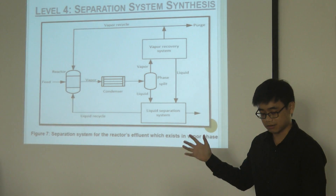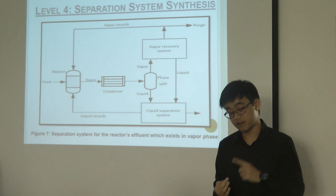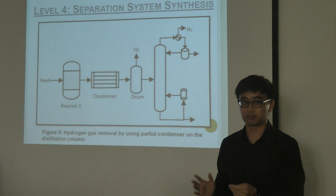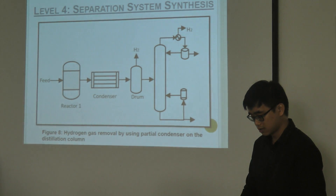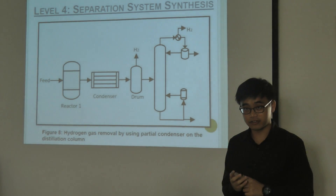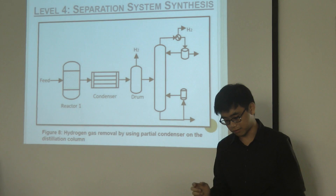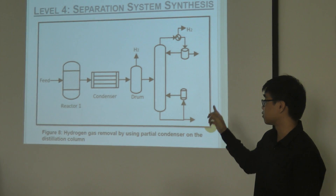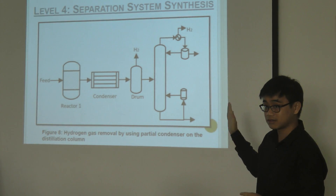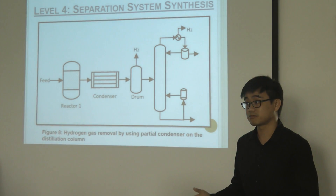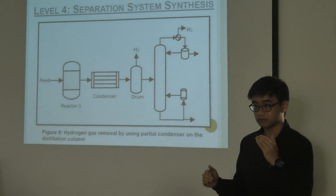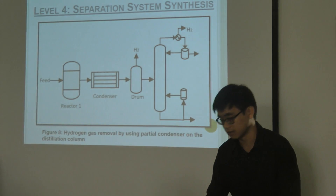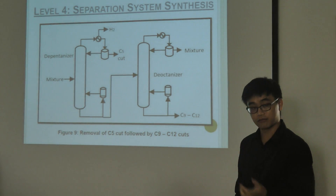Now, going into more detail on our process: hydrogen gas is removed using partial condensation. The boiling points of hydrogen and hydrogen sulfide are very low — negative 252°C and negative 59.7°C respectively. Hydrogen is removed first through the drum, and then further removed through the partial condenser. Because the temperature is so low, the other components become liquid while only hydrogen remains in vapor form, so it can be removed this way. Next is the removal of the C5 cut, followed by the C9 to C12 cut. There are two ways of arranging these two distillation columns — either de-pentanizer followed by de-nonanizer, or vice versa. It is more economical to remove unnecessary components first, at the beginning, so that we can reduce the flow rate that equipment after these two columns has to handle, reducing cost and increasing efficiency.